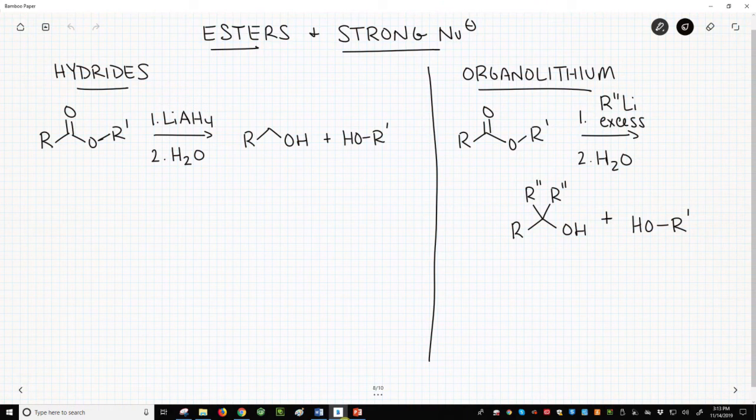On the left, we have the reduction of an ester to an alcohol with lithium aluminum hydride. Step one is LiAlH4, and step two is water. The reaction generates two alcohol products. The ester is cleaved during the reaction.